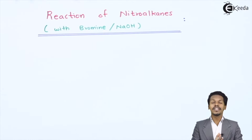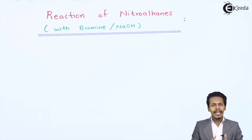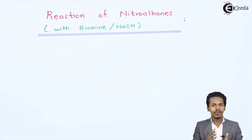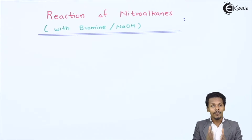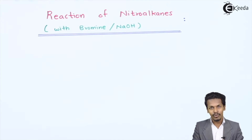So friends, now in this topic we are going to talk about the reaction of nitroalkane with bromine in the presence of NaOH. There are primary, secondary, as well as tertiary nitroalkanes. So depending on that, I am going to talk about the reaction of bromine in presence of NaOH with primary, secondary, and tertiary nitroalkane.